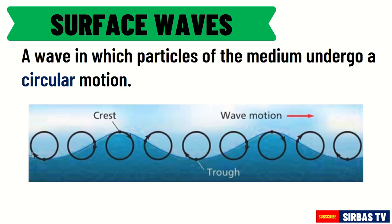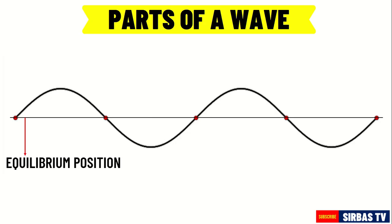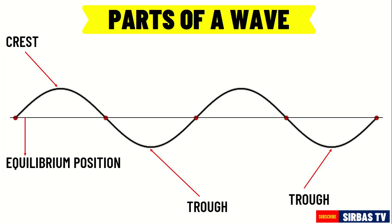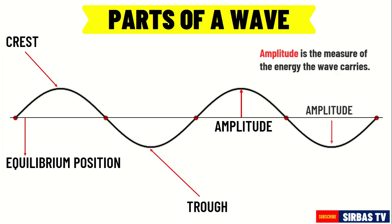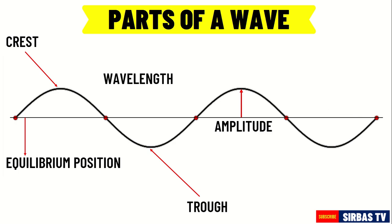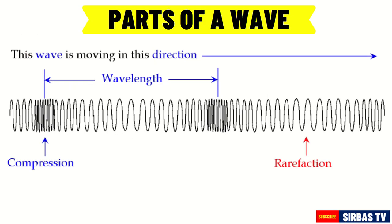To understand more about waves, let's talk about its parts. The equilibrium position is the undisturbed position of the wave. The highest point of a wave is known as the crest, while the lowest point is the trough. The maximum distance from the equilibrium position to a crest or to a trough is called the amplitude — it is the measure of the energy the wave carries. The wavelength is the distance between two successive identical parts of a wave, such as two consecutive crests or troughs in a transverse wave, or two consecutive compressions or rarefactions in a longitudinal wave. Wavelength is denoted by the symbol lambda and measured in meters.